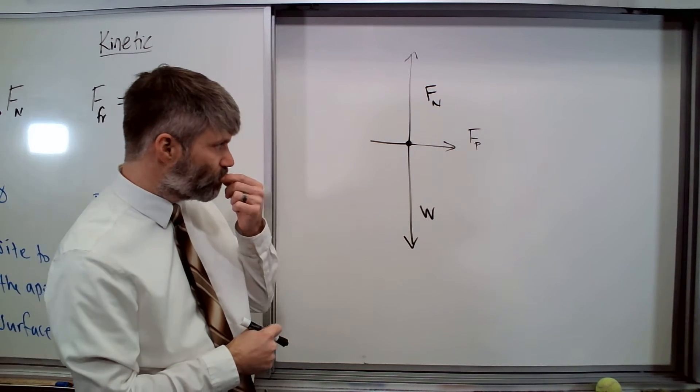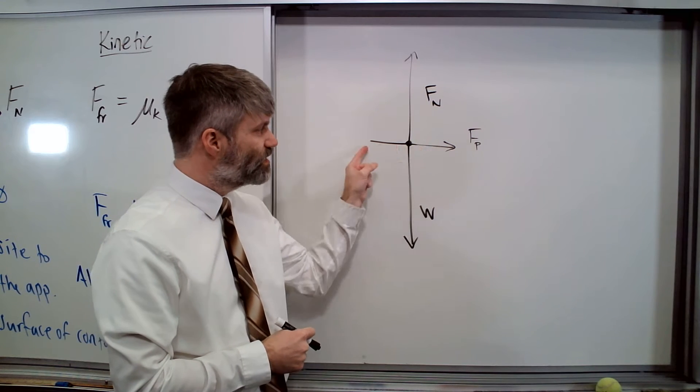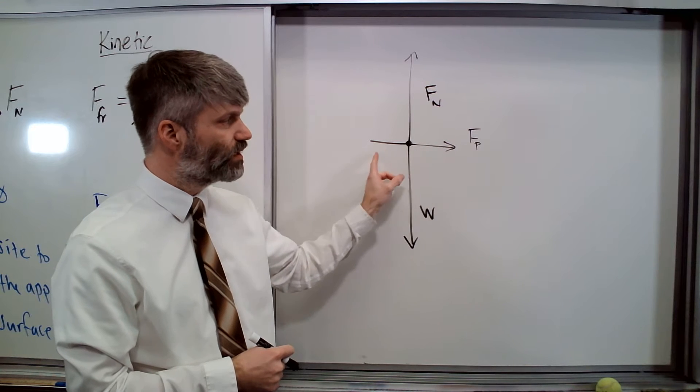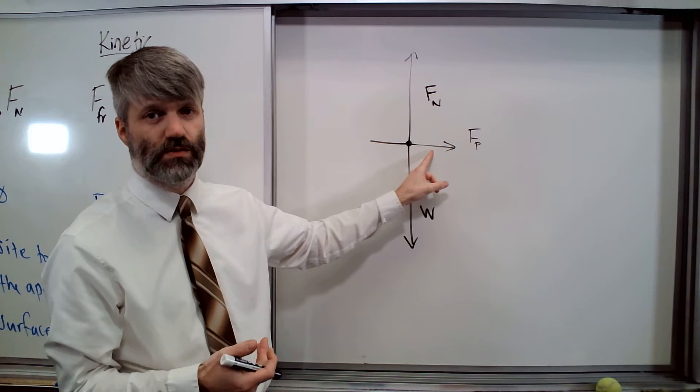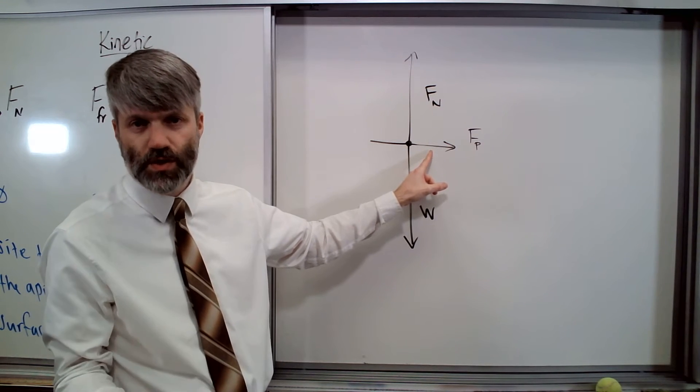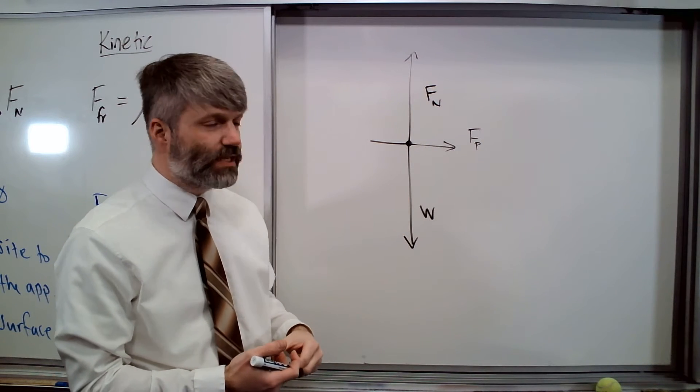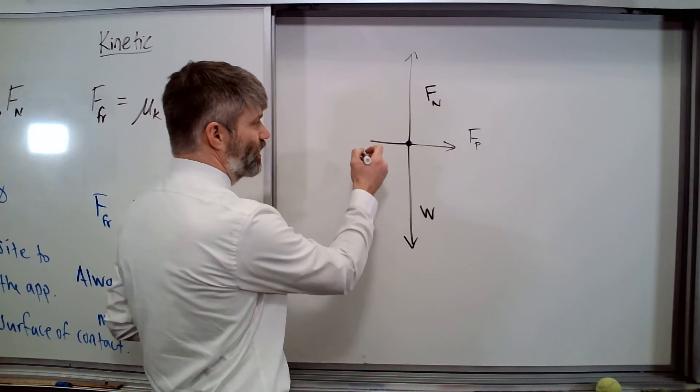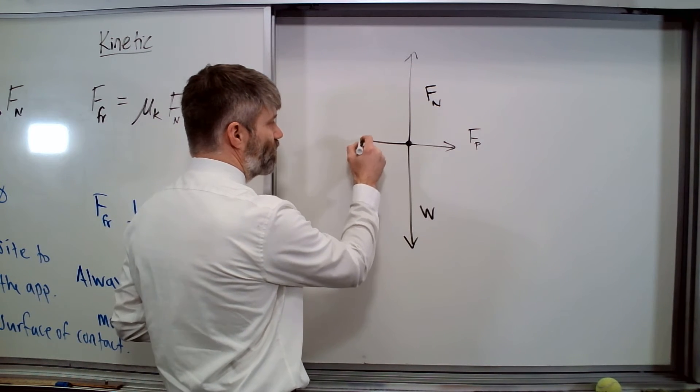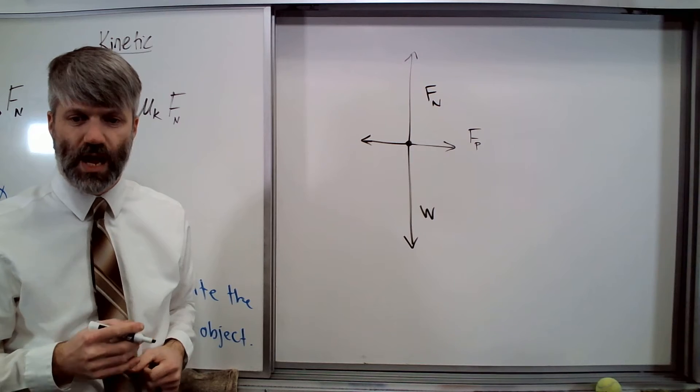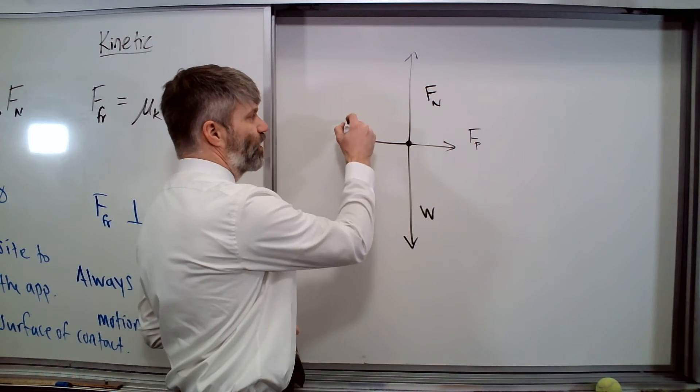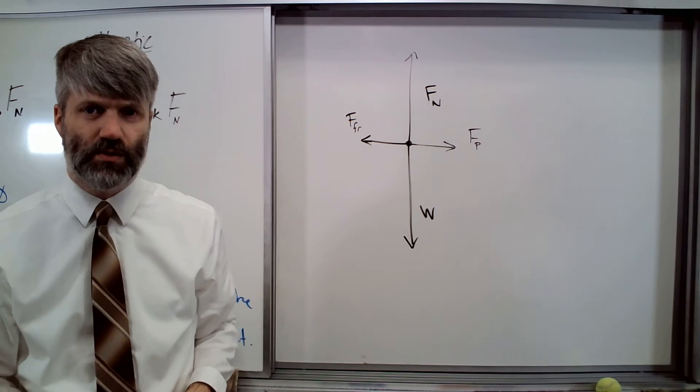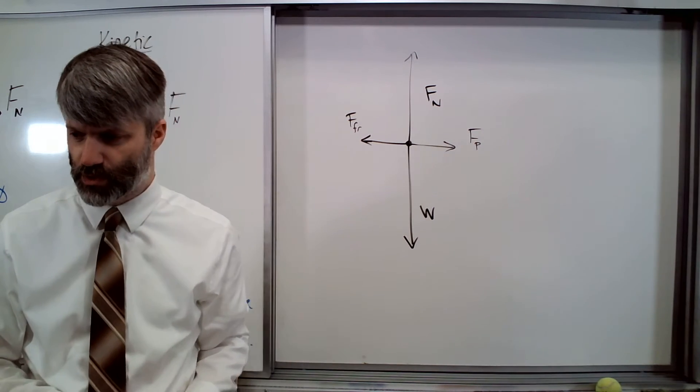So in the y direction the forces are balanced, but we can say too, in the horizontal direction, is the sofa accelerating? Well, no. And if it is not, then we know that the force of her push has to be balanced exactly by the force of friction. So we should make its vector equal in magnitude to the force of push and opposite in direction. So here's our free body diagram of the sofa being pushed across the floor.